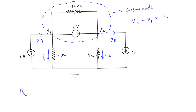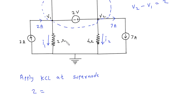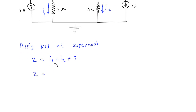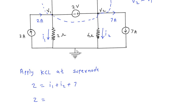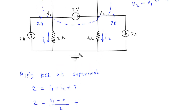We will apply KCL at the supernode. The entering current is 2A and the leaving currents are I1 plus I2 plus 7. I1 is equal to v1 minus 0 upon 2, and I2 is equal to v2 minus 0 upon 4.